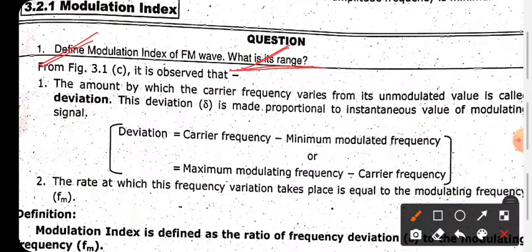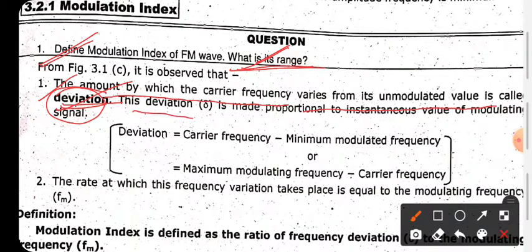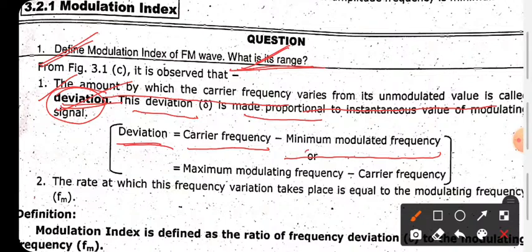The amount by which the frequency varies from its unmodulated carrier frequency is called deviation. The deviation is equal to carrier frequency minus minimum modulated frequency, or alternatively, maximum modulated frequency minus carrier frequency. This is the deviation formula.